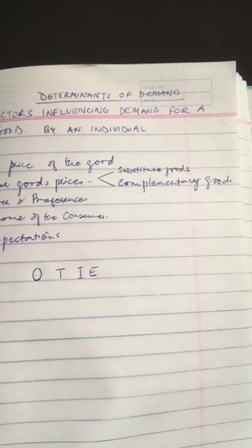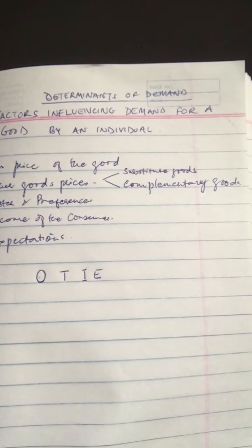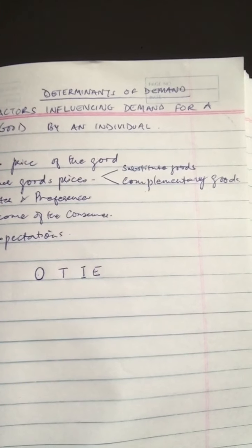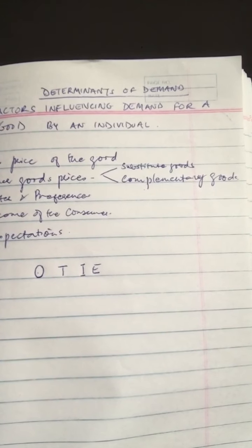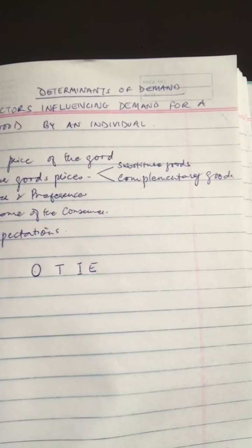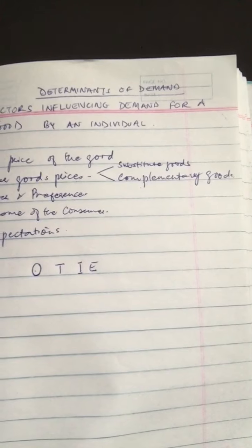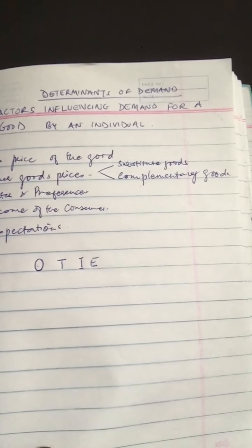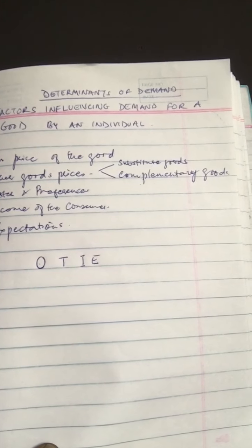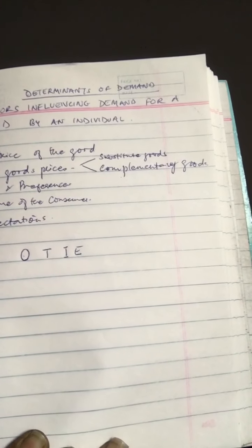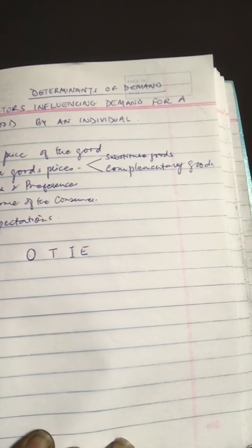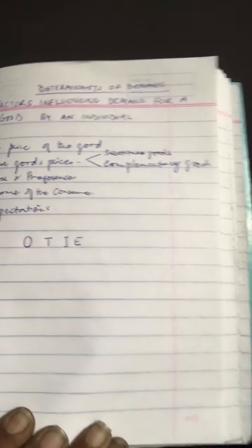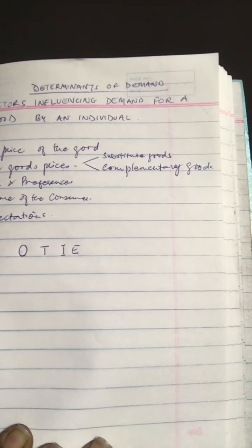Generally, the demand for a good by an individual consumer depends on the own price of the good. With some exceptions, demand for a good rises with a fall in price and falls with a rise in price — this is the inverse relation between price and demand for any normal good. We will distinguish normal goods and inferior goods later.